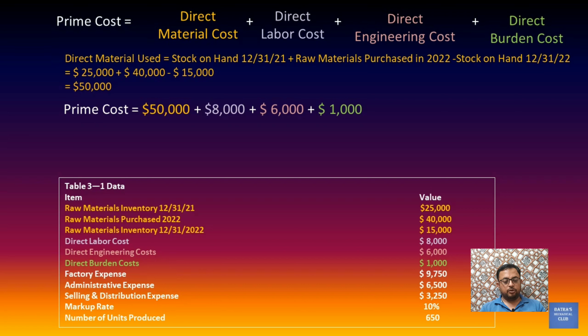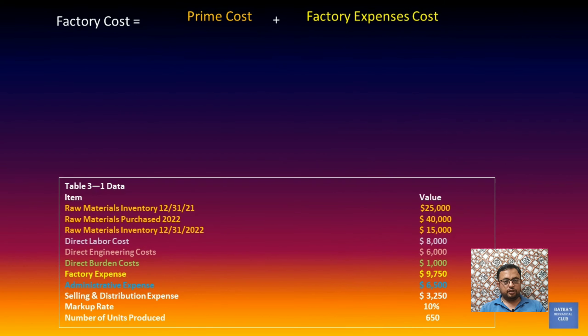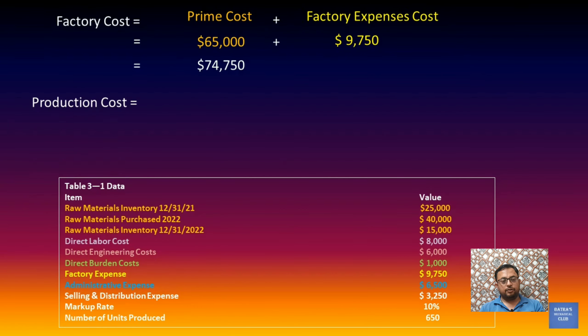Now we will calculate the factory cost, which is the sum of prime cost plus factory expenses. Factory expenses are directly given in the table. We take the prime cost of $65,000 and add factory expenses of $9,750, giving us a total factory cost of $74,750.